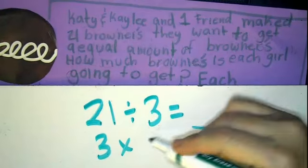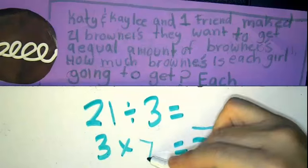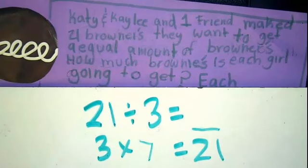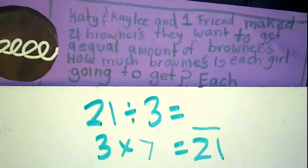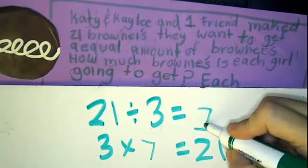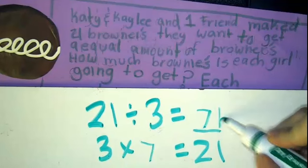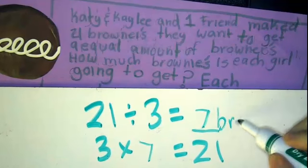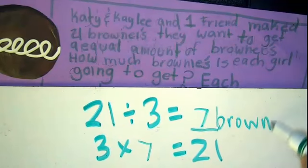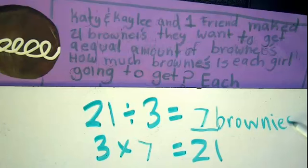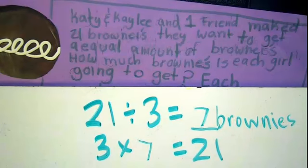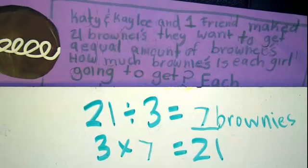Three times seven is 21, so 21 divided by three equals seven. Each girl will get seven brownies. That sounds good. All right, let's do one more.